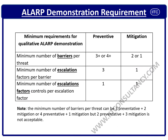By now we have understood the basic bowtie risk analysis. This slide covers the LR demonstration requirement. I have prepared a separate 10-minute video to explain what LR demonstration is and how it is done — covering the minimum barriers for threats, minimum number of escalation factors per barrier, and minimum number of escalation control measures for each escalation factor, on both the preventive and mitigating sides.